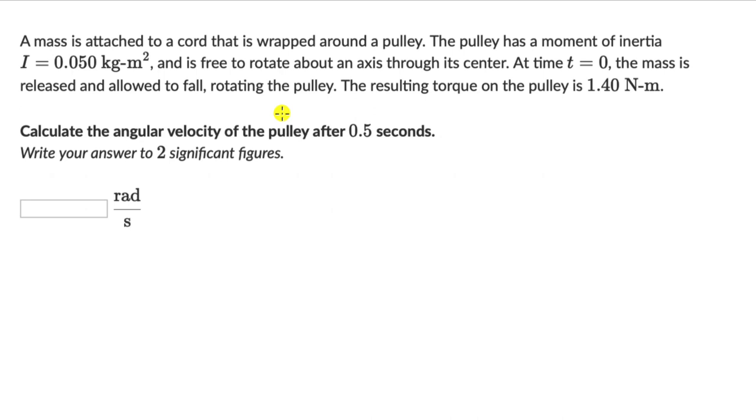Let's solve a question on torque and angular acceleration. Here we have a mass which is attached to a cord that is wrapped around a pulley. The pulley has a moment of inertia of 0.05 kilogram meter square and is free to rotate about an axis through its center. At time t equals 0, the mass is released and allowed to fall, rotating the pulley.